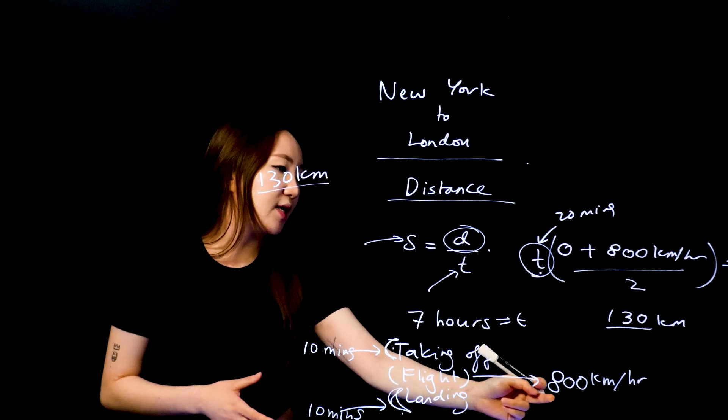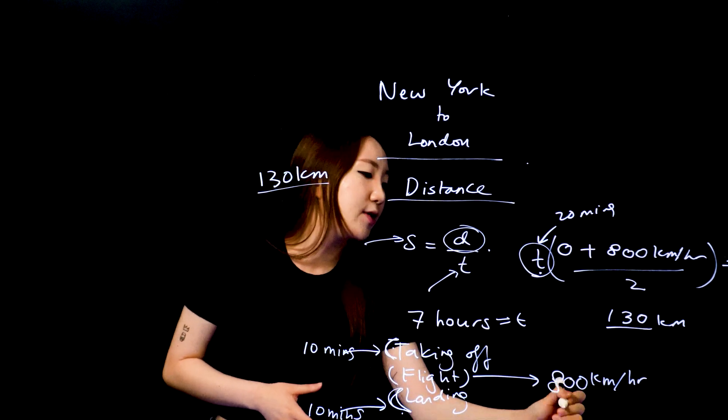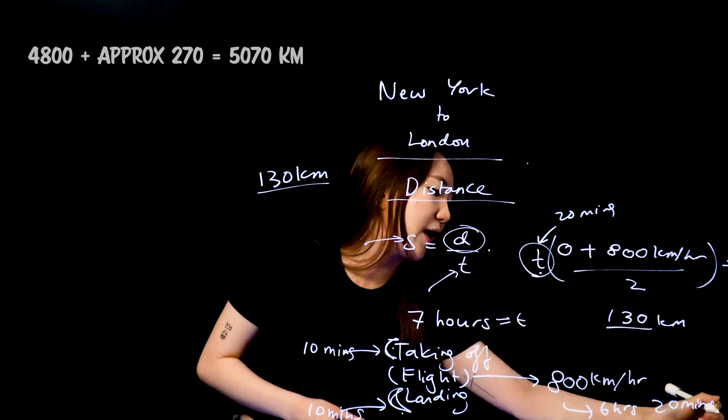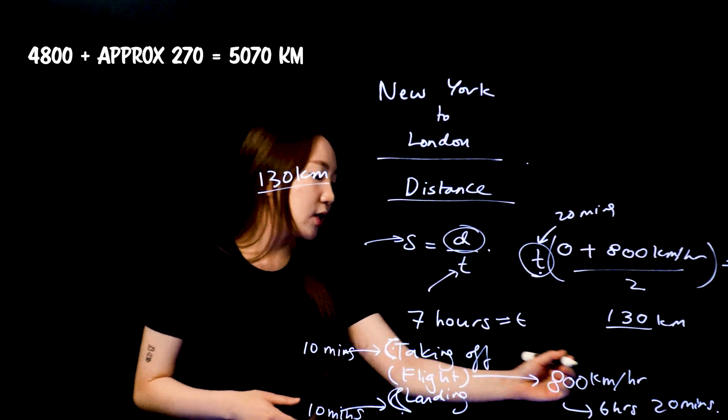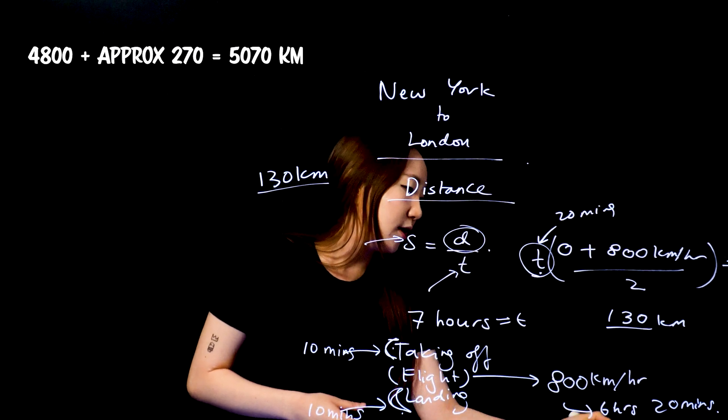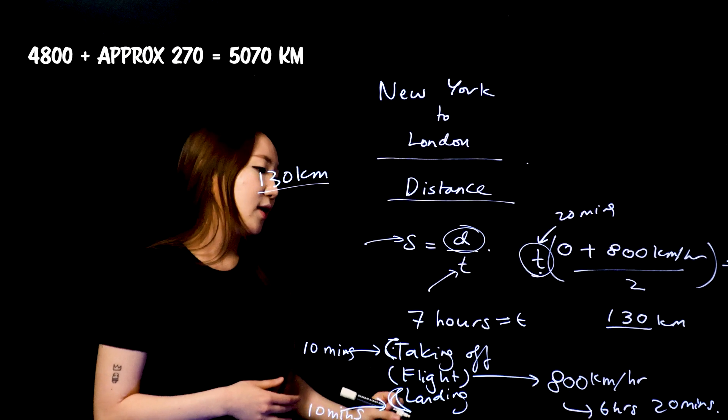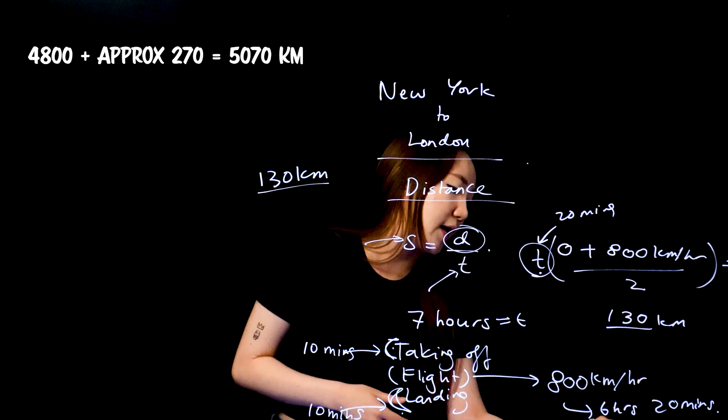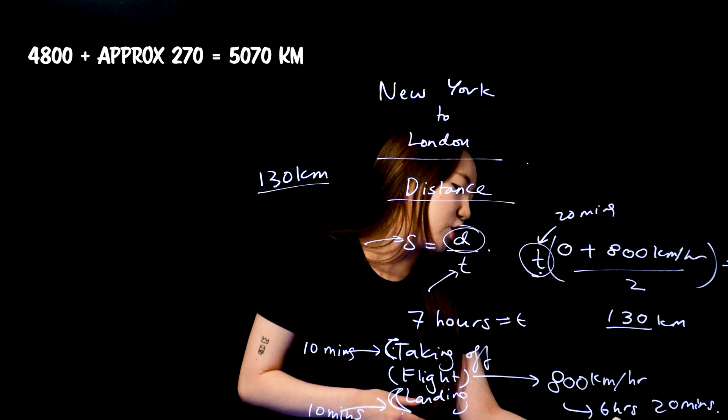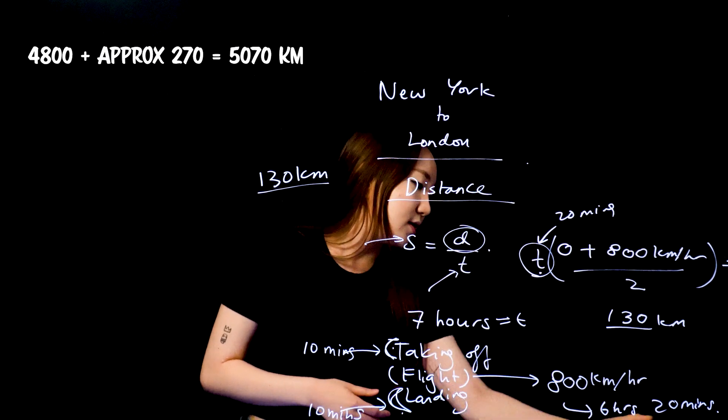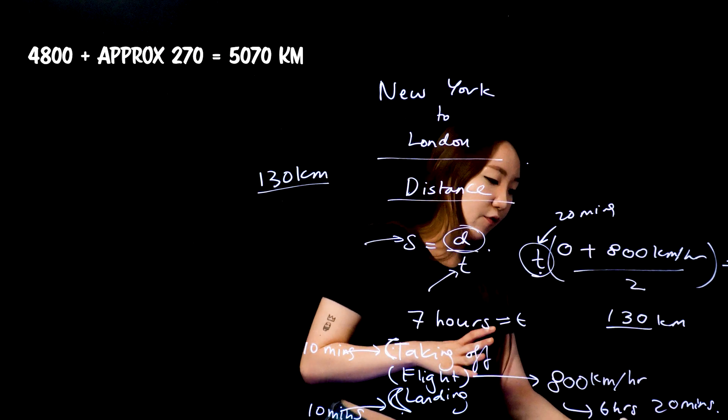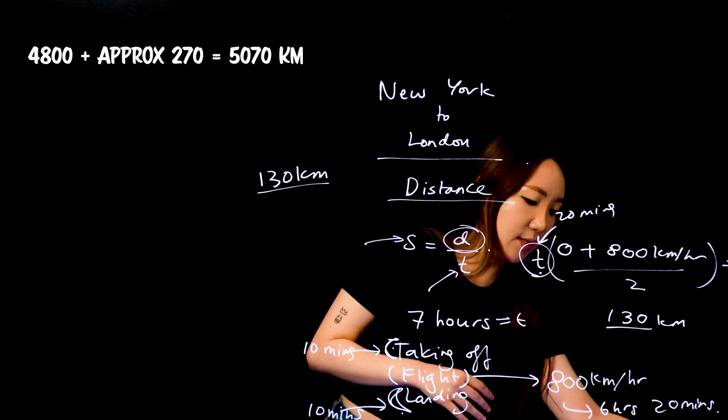Now I need to work out this for the middle portion. So the remaining six hours and 20 minutes, I'm basically saying is traveling at a speed of 800 kilometers per hour. So I'll just multiply that through, 800 by six is 4,800 plus the additional 20 minutes. Again, I'd probably just go for an estimate roughly and just say it's about maybe 270 kilometers roughly. So a total kind of cruising time of about 5,070 kilometers.